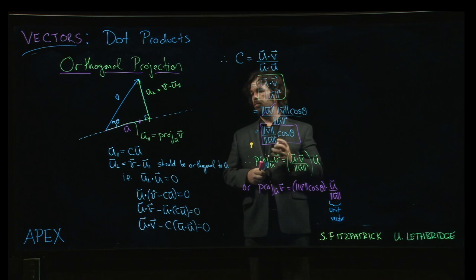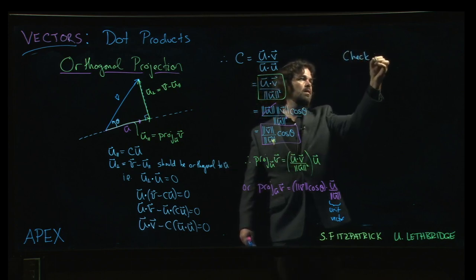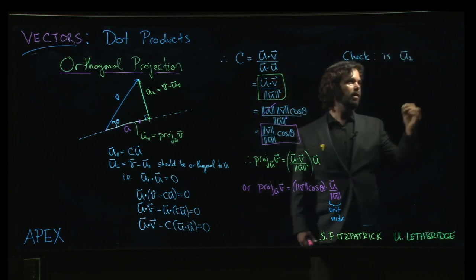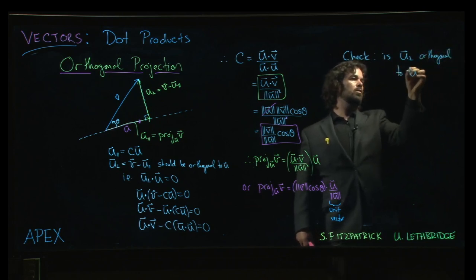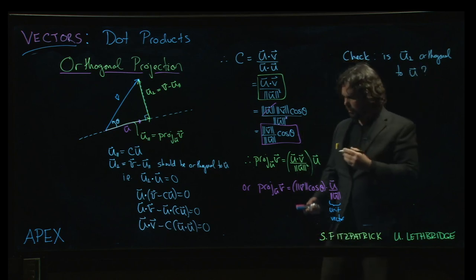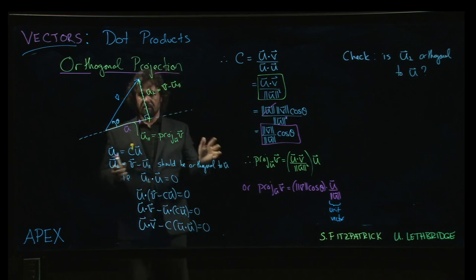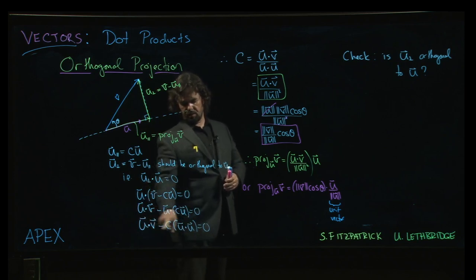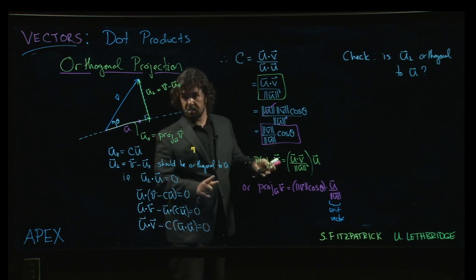Maybe one last thing to note is we can check, is the perpendicular part orthogonal to u? Well, it's supposed to be. And, I mean, maybe I'll leave that as an exercise for you to try, but honestly, it's really a matter of working through this result here, now knowing what c should be and plugging it in and confirming that, yes, indeed, it does simplify to zero at the end.